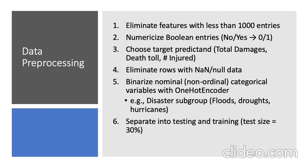The next thing we do is numericize Boolean entries, so no and yes become 0 and 1. Then we choose a target predictand, which would be total damages, death toll, or number injured. Next, we eliminate any rows remaining with null data, and then we binarize nominal or non-ordinal categorical variables with one-hot encoding.